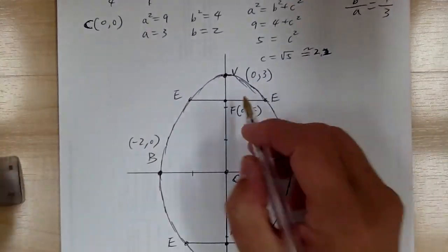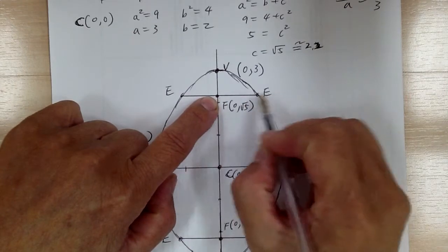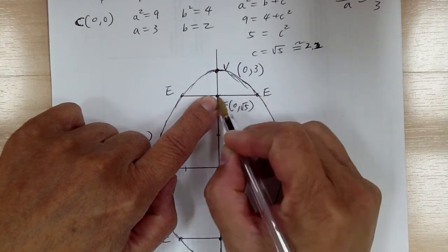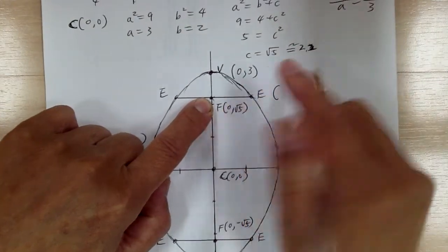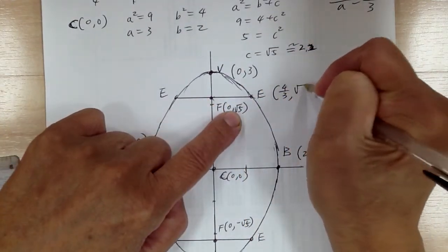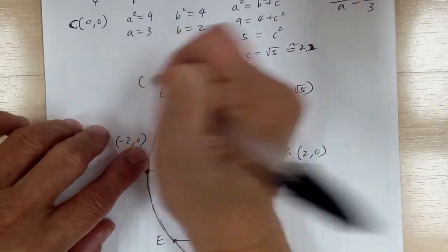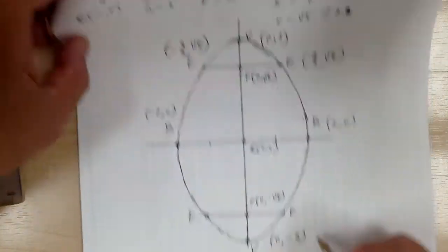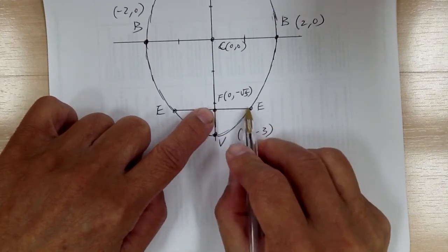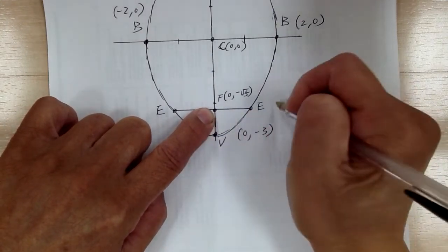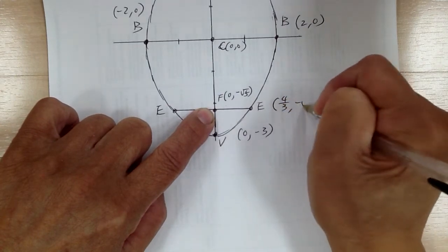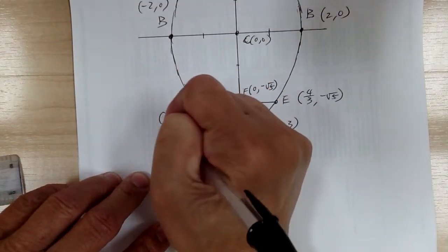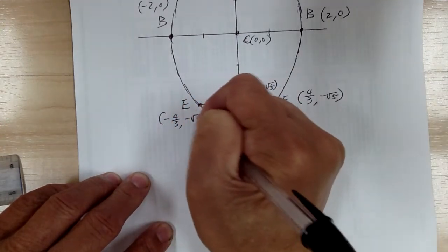Starting from (0, √5): when you go sideways that's x, so add onto x and y stays the same, giving (4/3, √5). Going the other way, subtract: (-4/3, √5). Starting from (0, -√5): going sideways gives (4/3, -√5), and going the other way gives (-4/3, -√5).